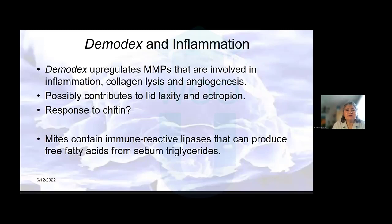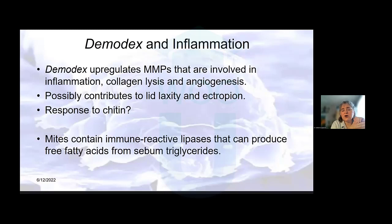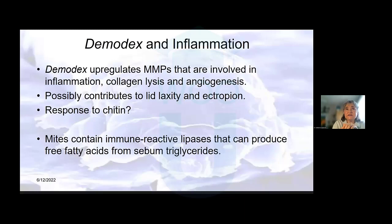Demodex upregulates MMPs that are involved in inflammation, collagen lysis. Does this contribute to the lid laxity we see in ectropion and in our floppy eyelid syndrome patients? Is it just a chitin thing that promotes inflammation? And lastly, we spoke about the regurgitative digestive material that contains lipases — they produce free fatty acids from sebum triglycerides. We've heard this before with MGD and the foamy tear film. So everything relates to everything else.